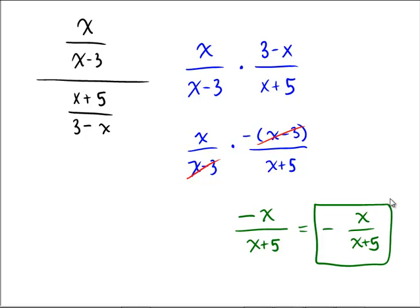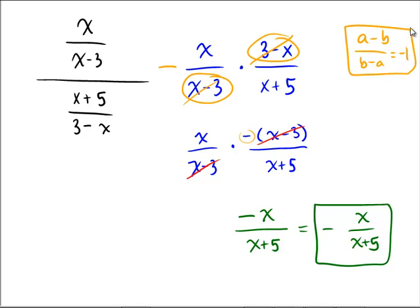Now, the shortcut I promised was that if you're lucky enough to see an x minus 3 and a 3 minus x, these do reduce with each other, but they reduce to a negative, as we saw right here. So in general, a minus b over b minus a is always going to reduce to be a negative 1. So you can use that as a shortcut if you start to recognize those coming up in your homework problems often.